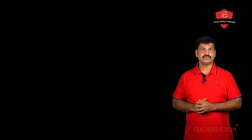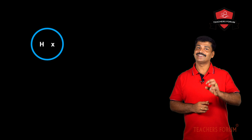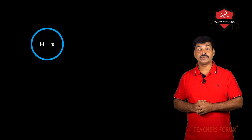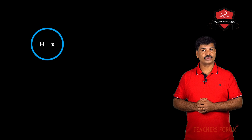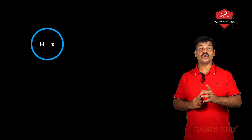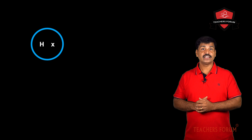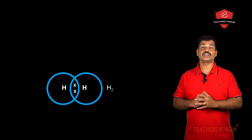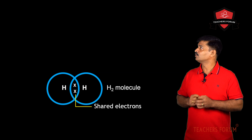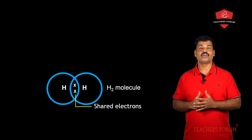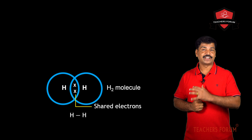Let us start with hydrogen. The atomic number of hydrogen is 1, meaning hydrogen has one electron in the outermost shell. To get the nearest noble gas configuration of helium, one more electron is needed. So two hydrogen atoms share their electrons with each other and form a hydrogen molecule. One pair of electrons — that is, two electrons — is shared, so the bond formed in a hydrogen molecule is a single bond.